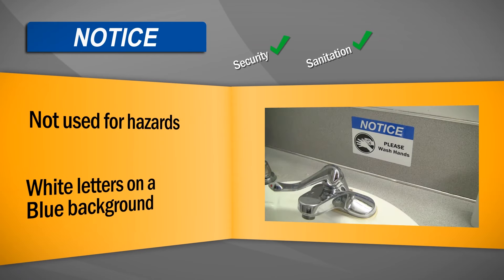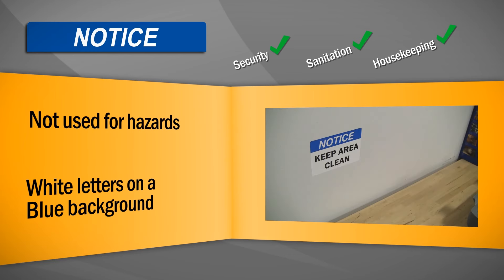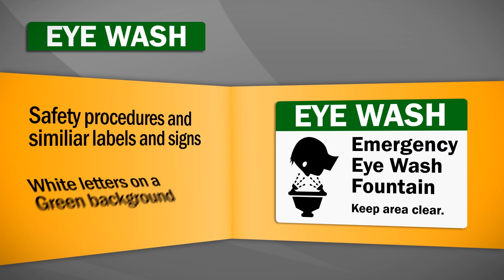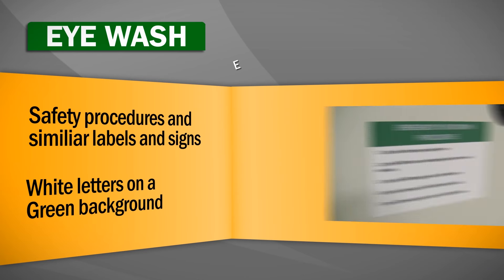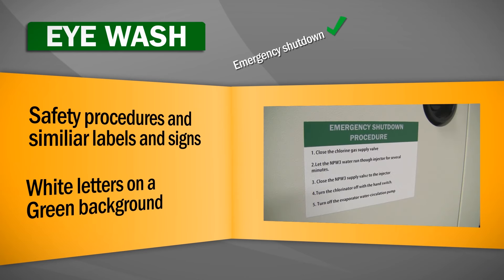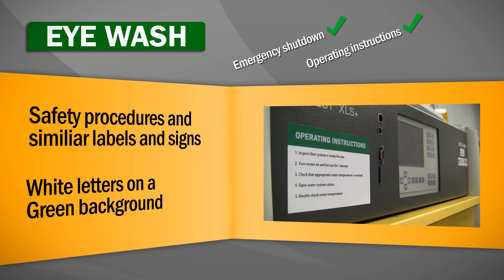Notice is not used for hazards. This signal word is used to convey security, sanitation, or housekeeping rules. General safety signal words are reserved for safety procedures and similar labels and signs. Each should be worded for specific applications such as emergency shutdown procedure or operating instructions.